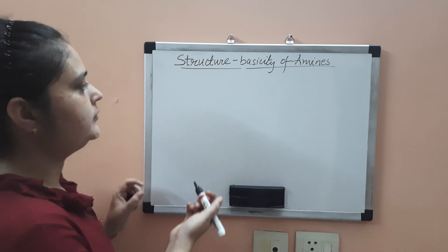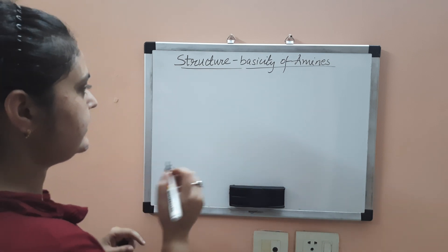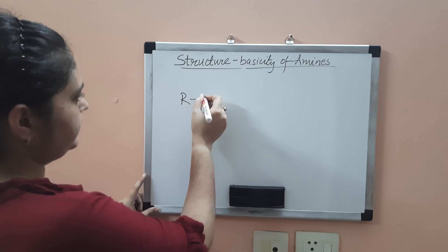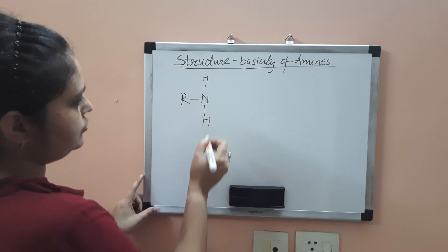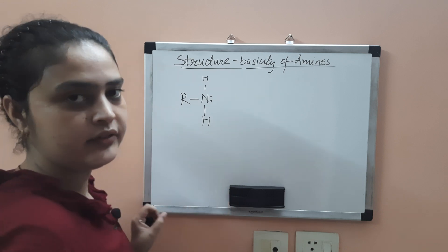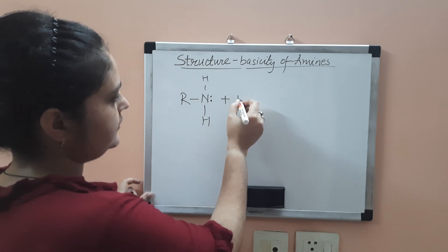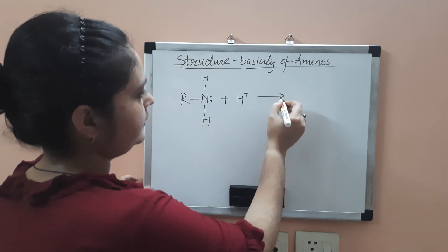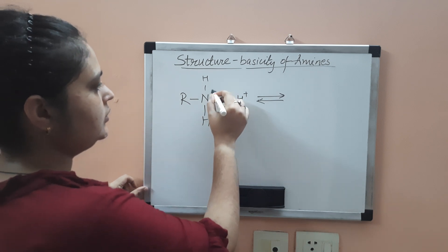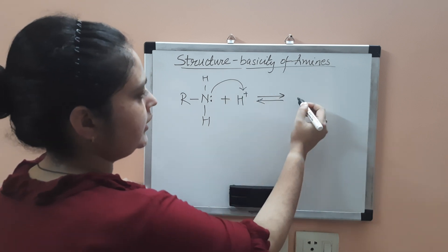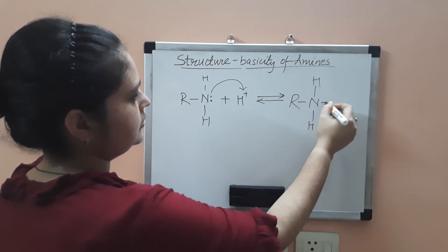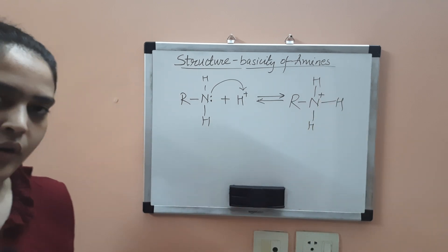First we will see the reaction of alkane amines with an acid to accept the proton. This is the alkane amine RNH₂. The nitrogen will have a lone pair of electrons and a proton will be added to it. The nitrogen takes the proton and forms an ammonium cation.